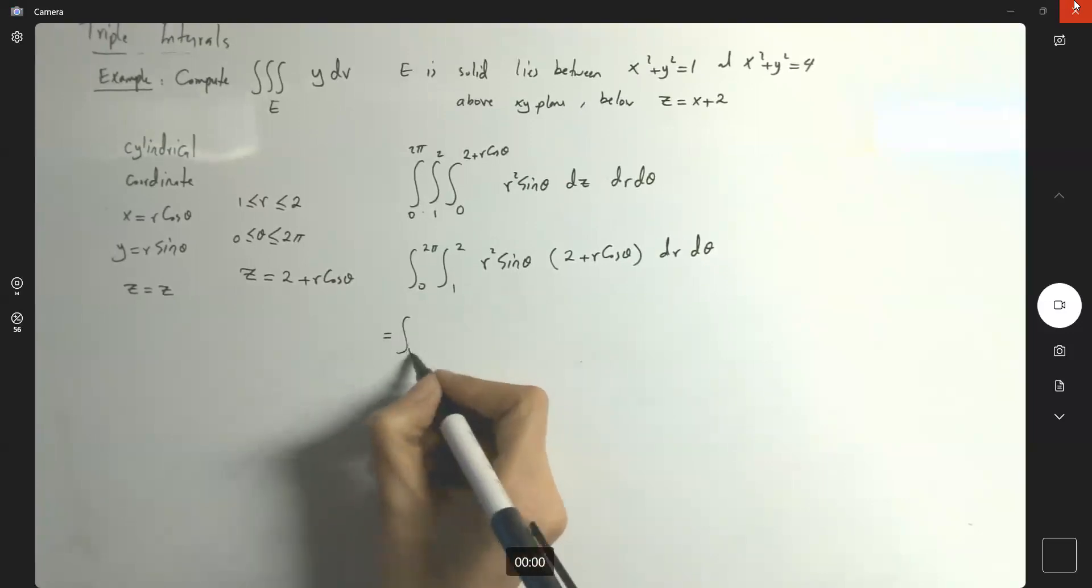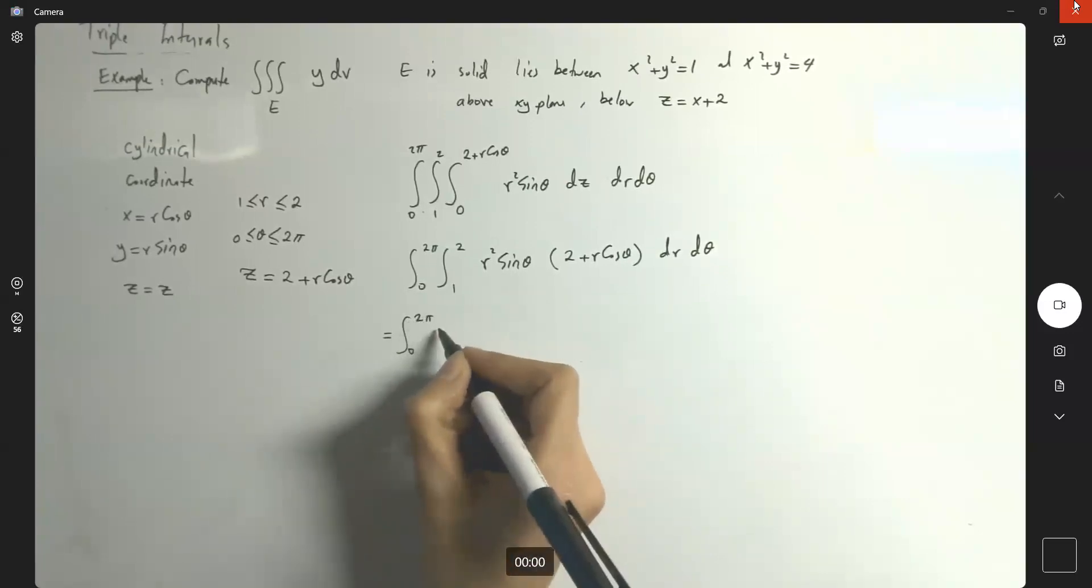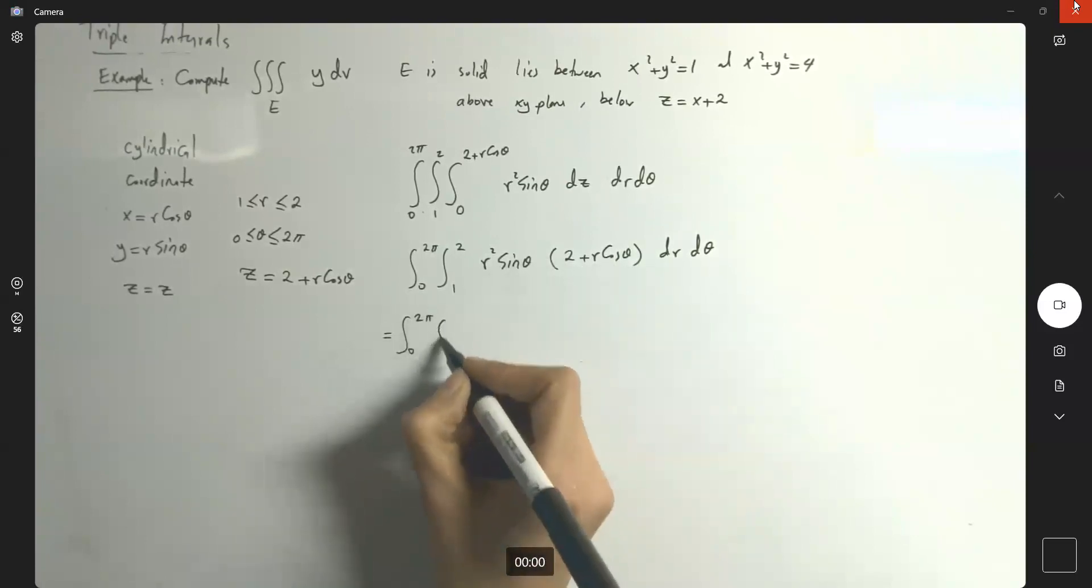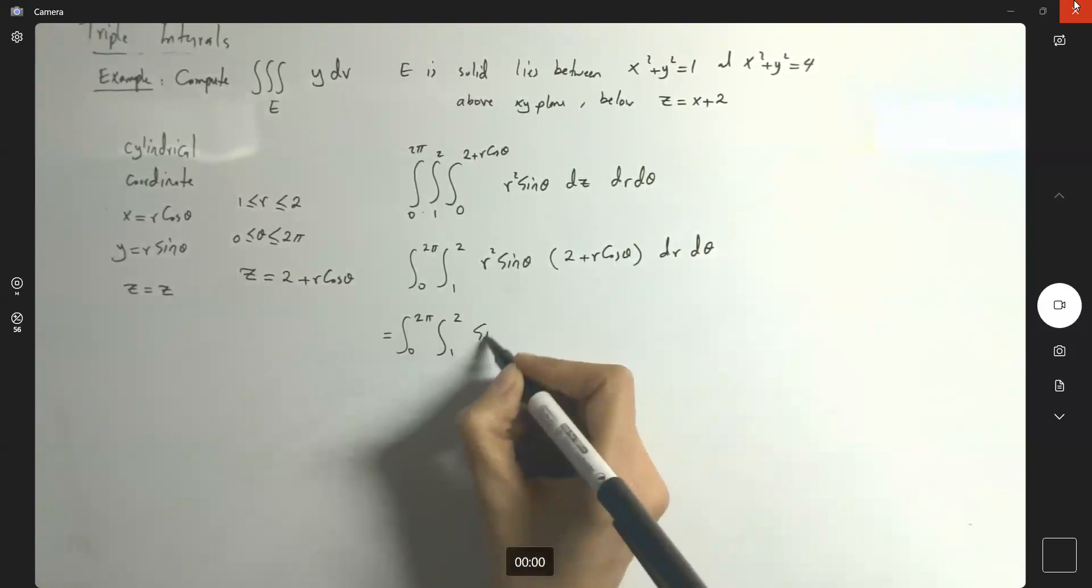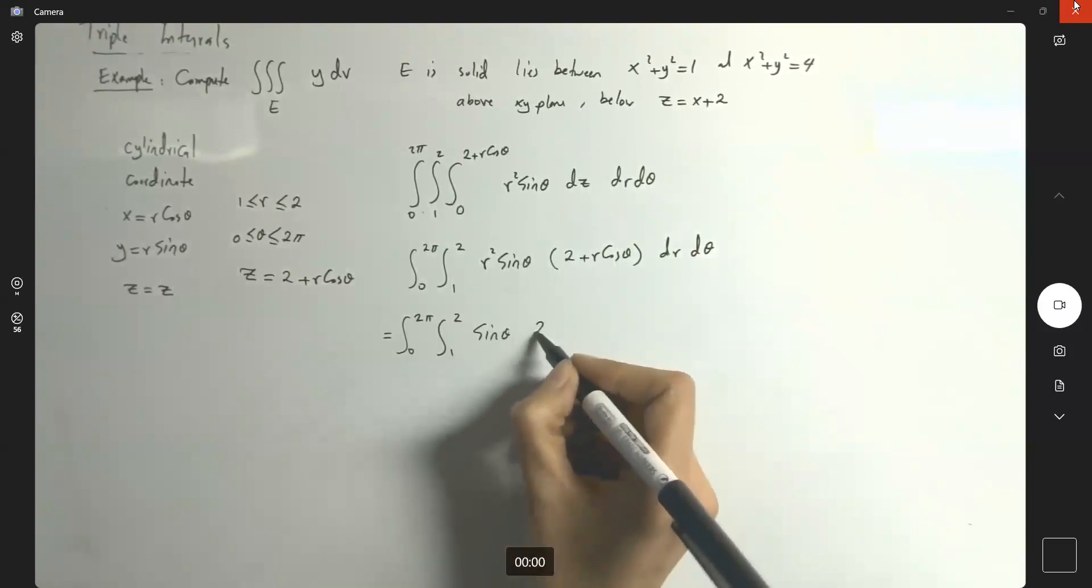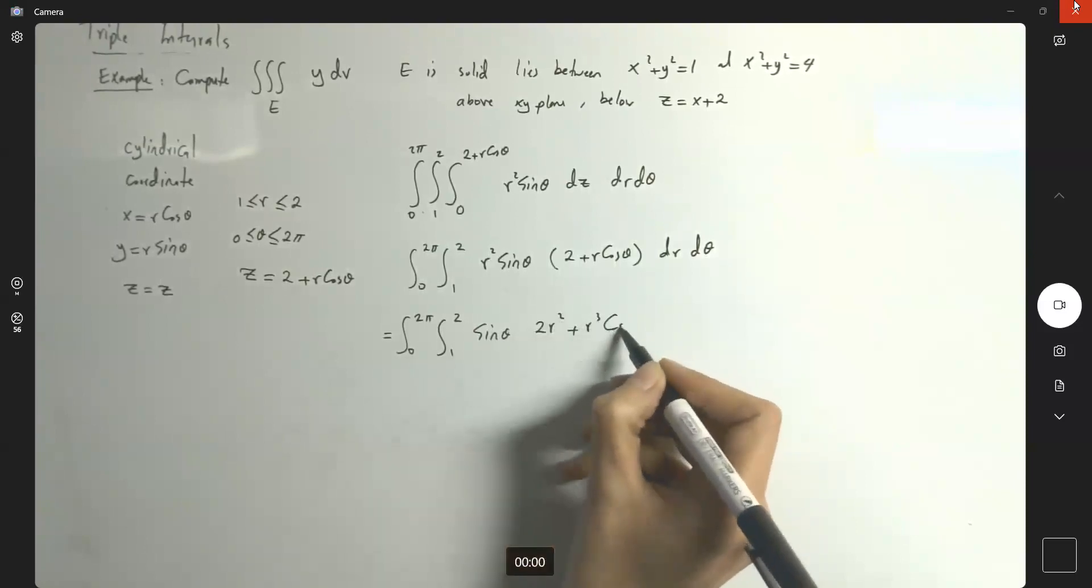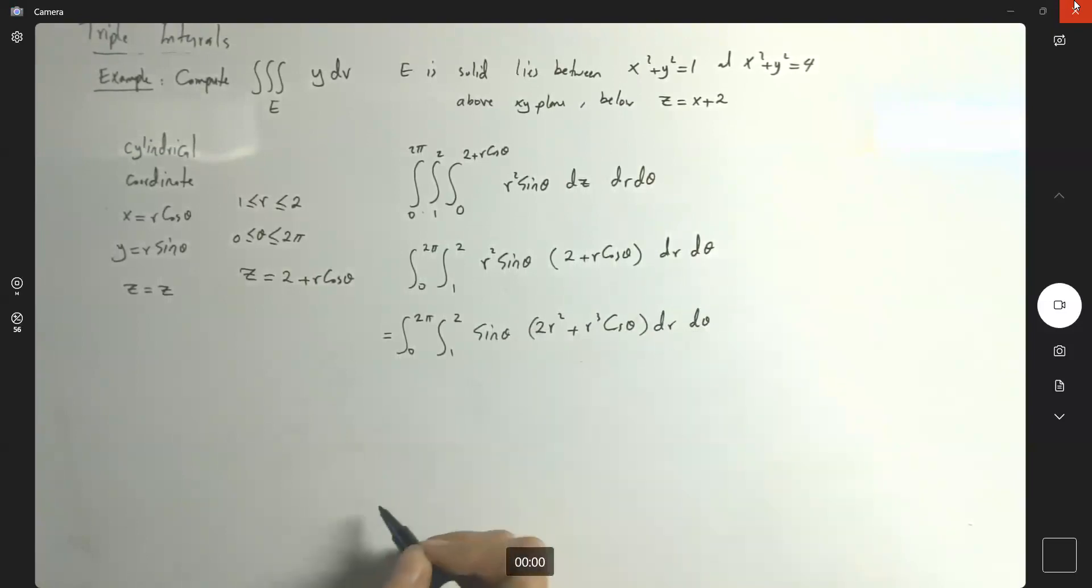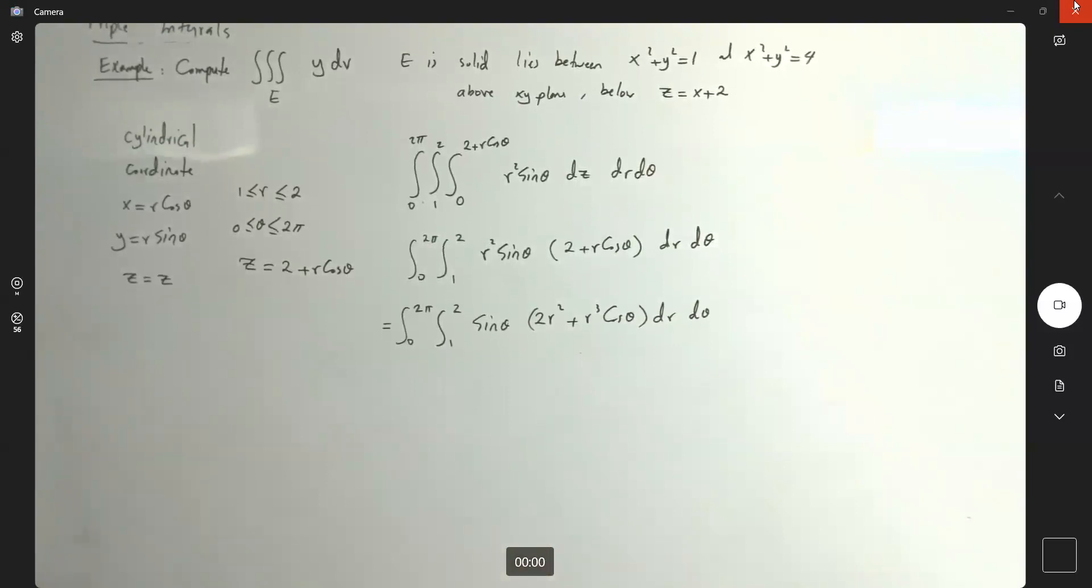This guy becomes the integral 0 to 2 pi. And here you can distribute r squared into parentheses. We get 1 to 2 sine theta stays outside. 2 r squared plus r cubed cosine theta, dr d theta.